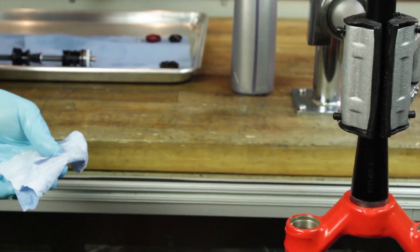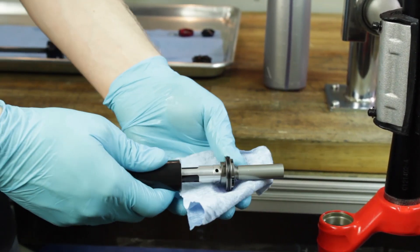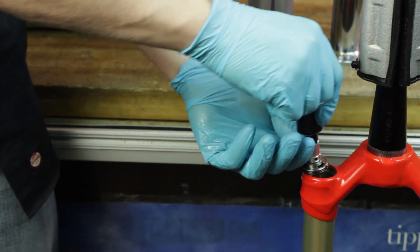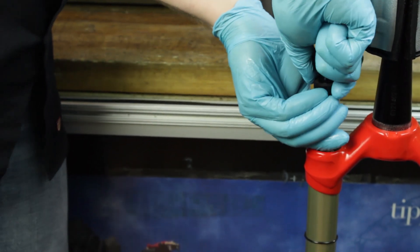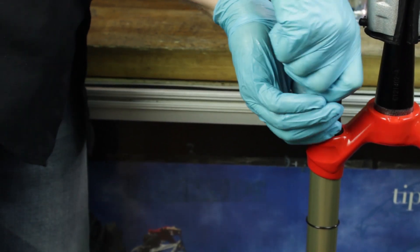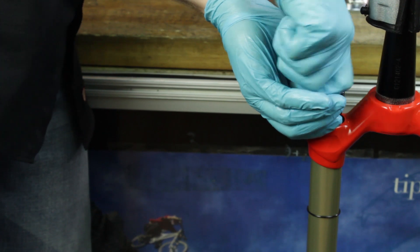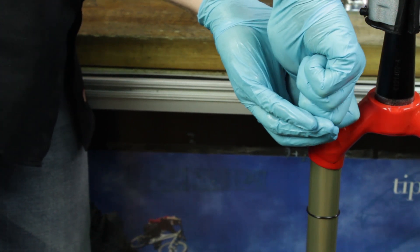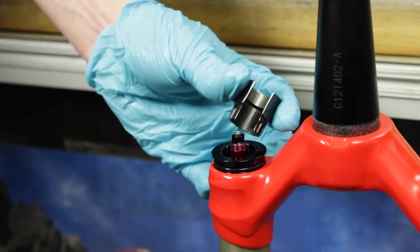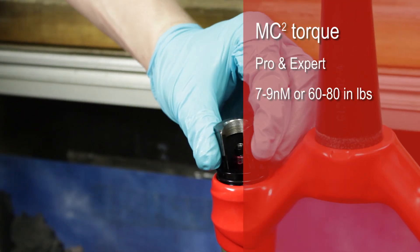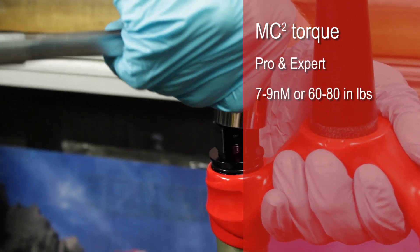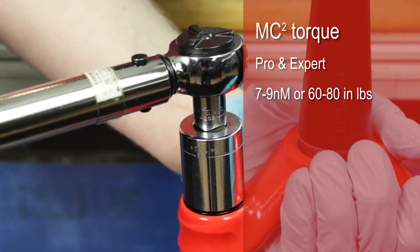Prepare the MC squared compression damper by lubricating the initial seal. Force the MC squared compression damper straight down with rotational motion until it reaches the threading of the top cap. Tighten down the compression rod cap to a torque of 7 to 9 newton meters or 60 to 80 inch pounds.